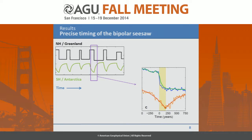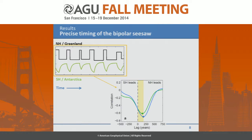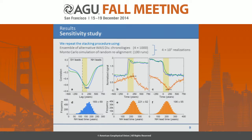The same happens for cooling events. I stacked all the cooling events in the Northern Hemisphere — blue is North GRIP, green is methane — and again the Antarctic warming response is delayed by about 200 years. You can confirm this by looking at the entire record: taking the cross-correlation between the Greenland record and the first time derivative of the Antarctic time series, we find the largest anti-correlation at a Southern Hemisphere lag — or Northern Hemisphere lead — of about 200 years. This result seems quite robust.